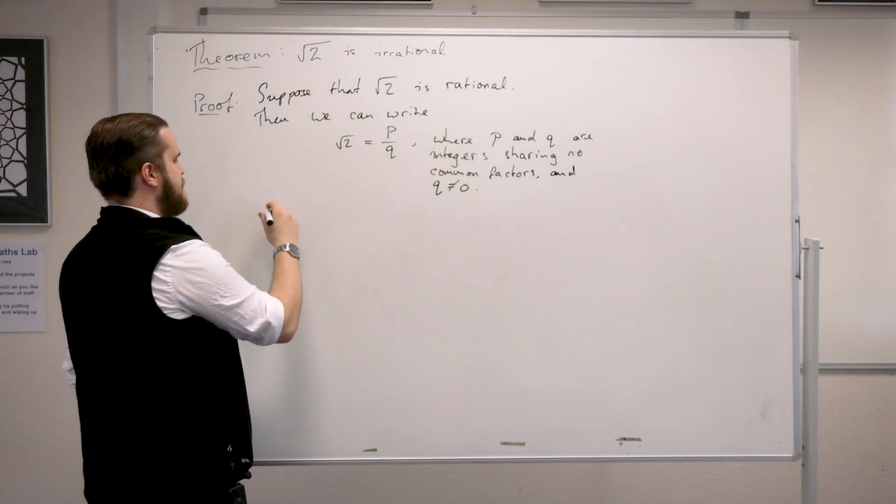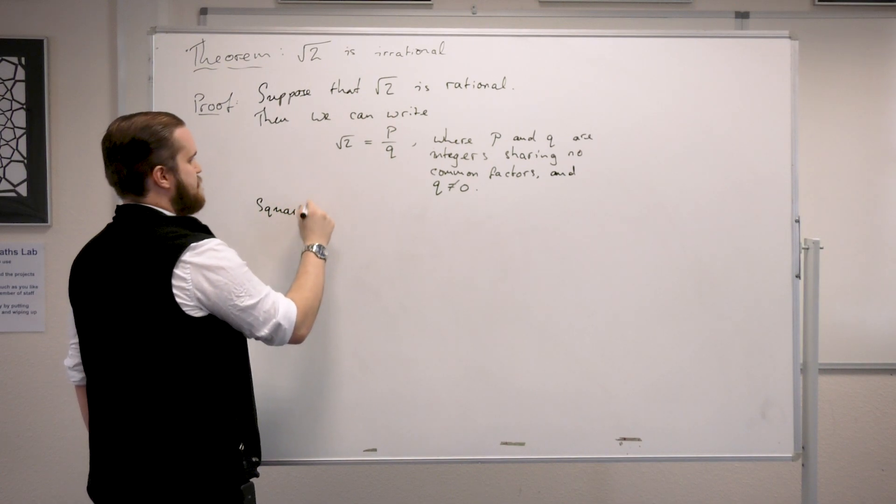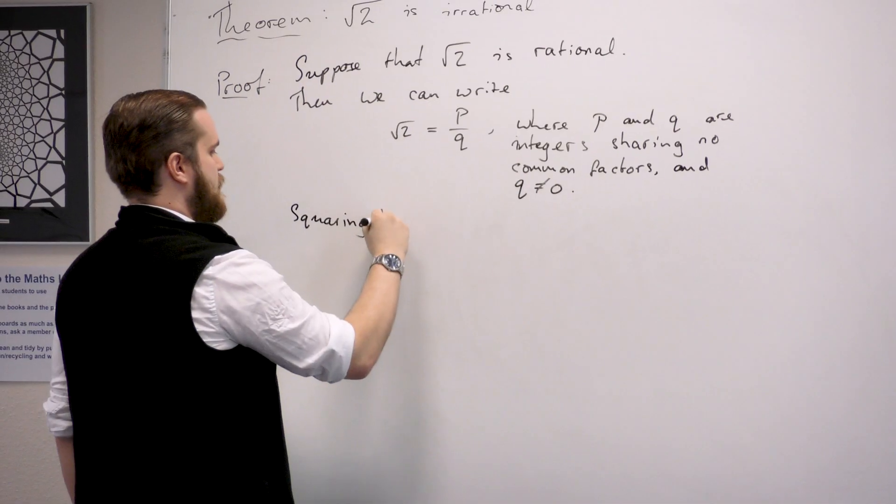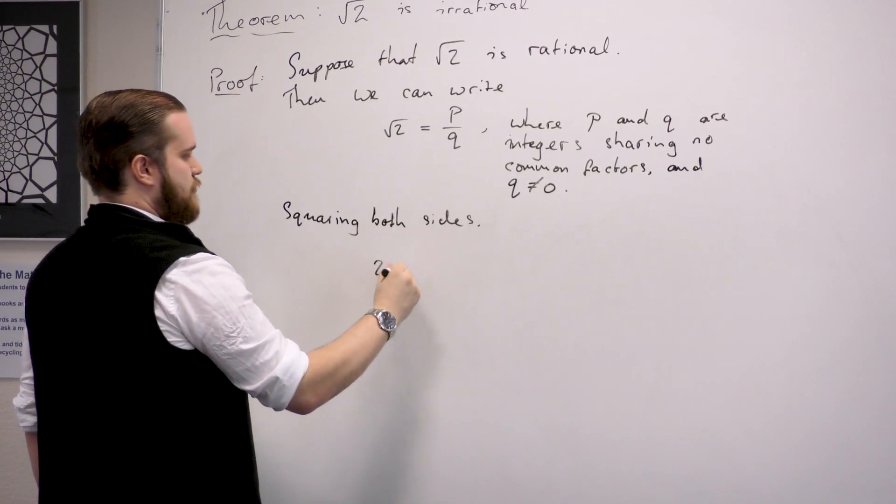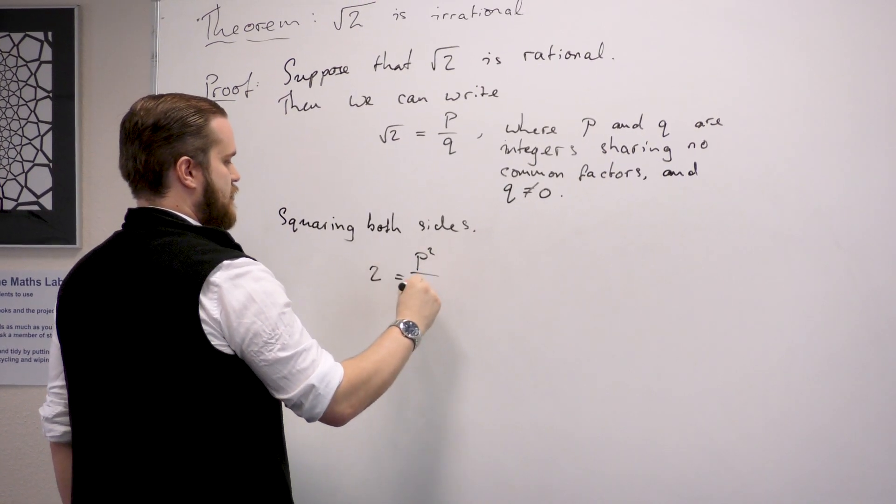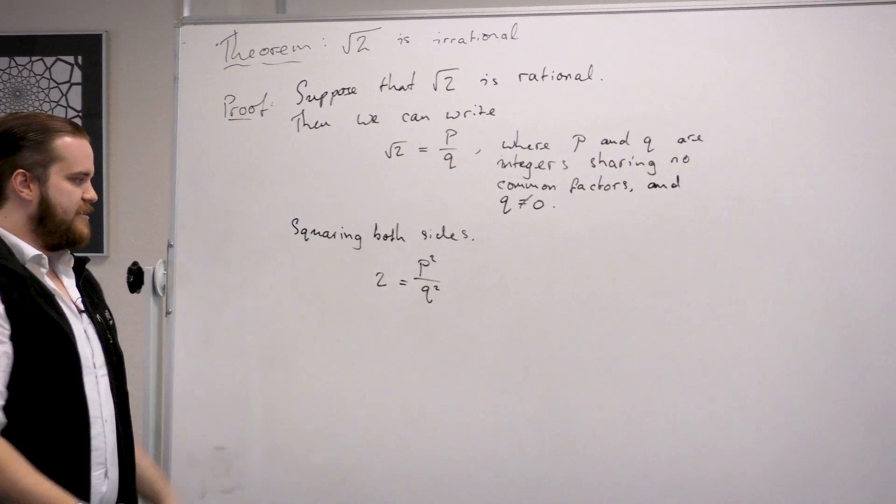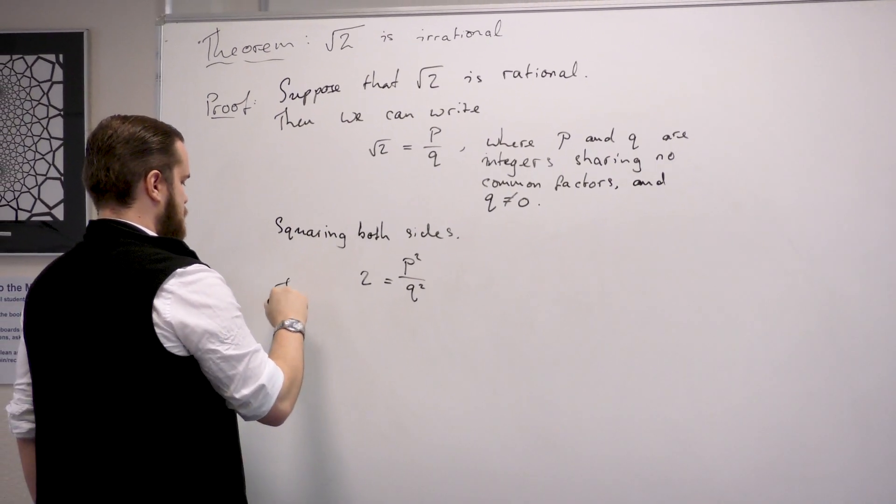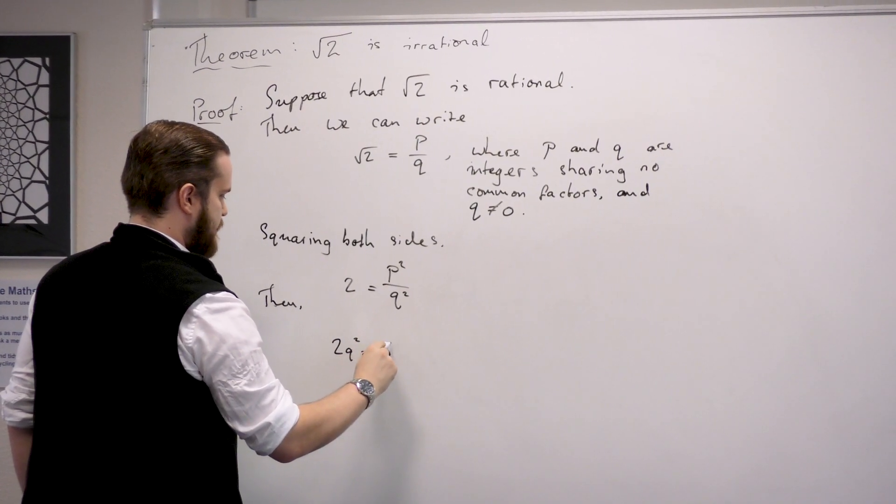So we'll square both sides to get rid of this square root sign. And then you have 2 is p squared over q squared. And then if we rearrange that, we have 2q squared equals p squared.